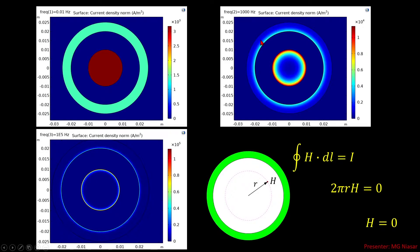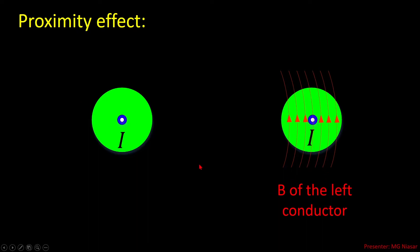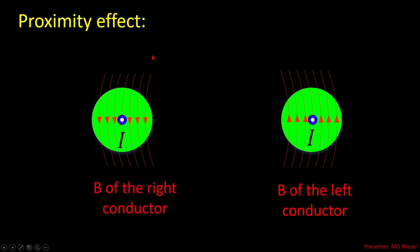To explain the current distribution on the outer conductor, we need to know another phenomenon: the proximity effect. Let's say we have two conductors, and one of them carries current I, and the other also carries a current. This conductor creates a magnetic field around itself, and that magnetic field also passes through the other conductor. Similarly, the other conductor creates a magnetic field which passes through the first conductor. The magnetic field of either conductor interacts with the other conductor and changes the distribution of current density in it. This phenomenon we call the proximity effect. If these two conductors are close by, this proximity effect is stronger; if they are farther apart, it is weaker, because the magnetic field is weaker at greater distance.